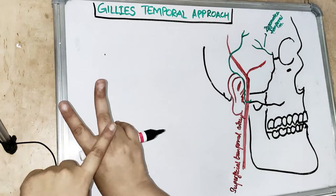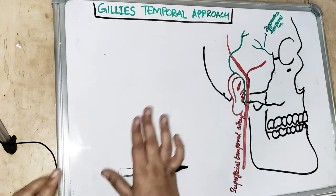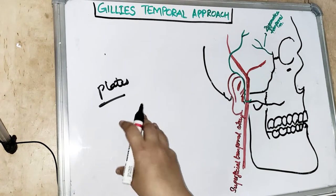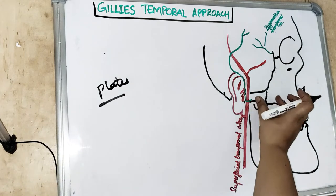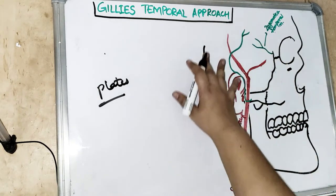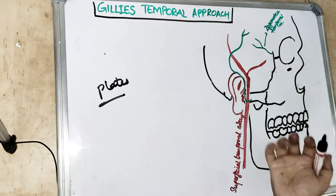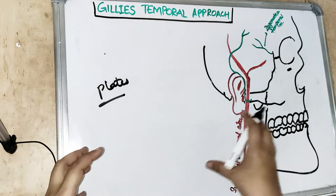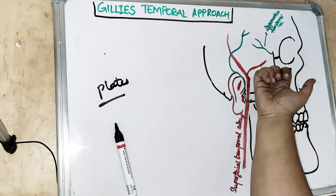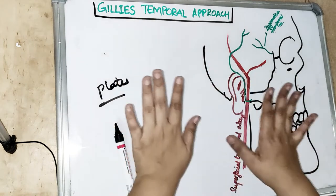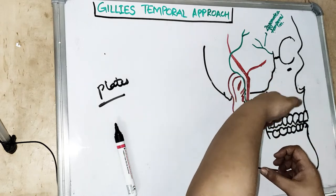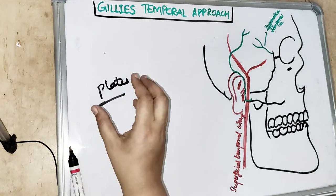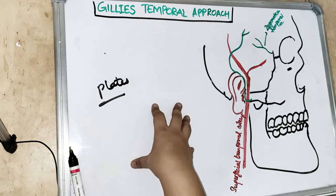We have two approaches. First, if the fracture segments are undisplaced, we don't need to give plates because the zygomatic bone can stabilize itself due to the temporal fascia. The masseter muscle pulls it from below, but the temporal fascia pulls it from above, keeping the zygomatic bone in position. So unlike mid-facial fractures, here the temporal fascia provides upward support, and we can treat it with a non-plating, non-internal fixation method.